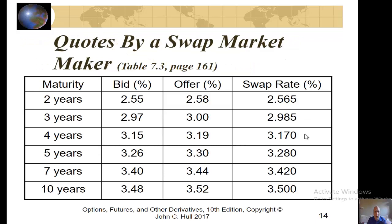How are swaps quoted? Here is an example of a list of swap quotes. Maturity is 2 years up to 10 years. We have a bid rate of 2.55% and ask rate of 2.58%, and the swap quote is an average of those two of 2.565%. In this case, you have an increasing interest rate environment.